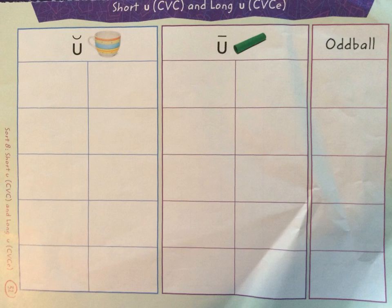Make sure you have your word sort mat out and ready to go. Remember not to write on your word sort mat, but just find your word sort cards to put under the correct word pattern — either short U, long U, or our oddball words.